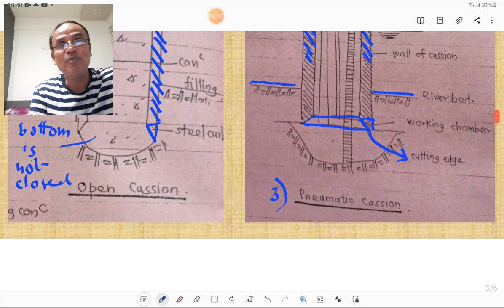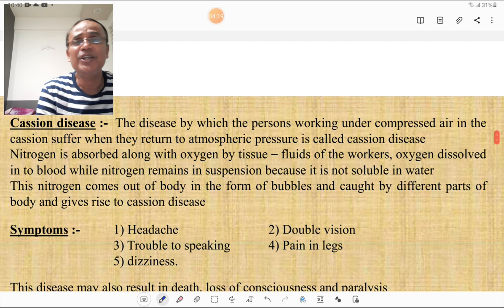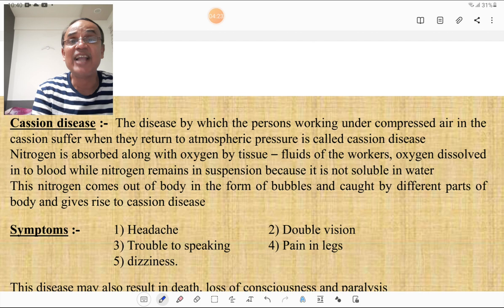These are the three different caissons: box caisson, open caisson, and pneumatic caisson. Then there is one short note always asked in competitive type of examinations as well as degree in civil engineering examination. What is the caisson disease?